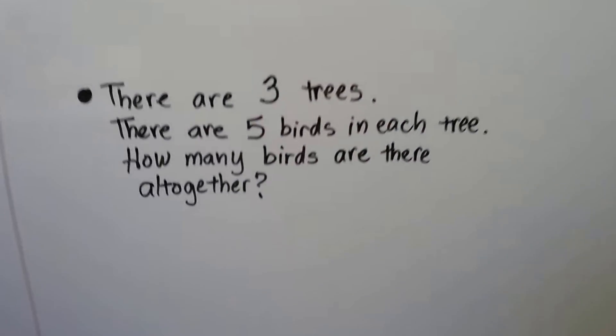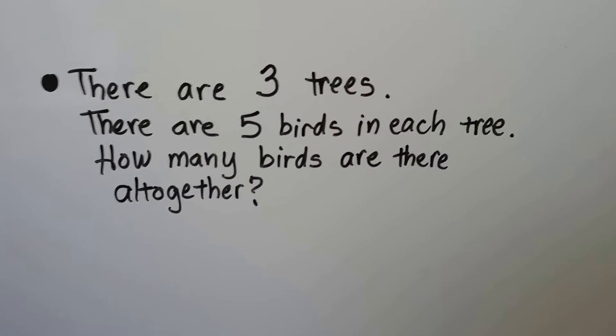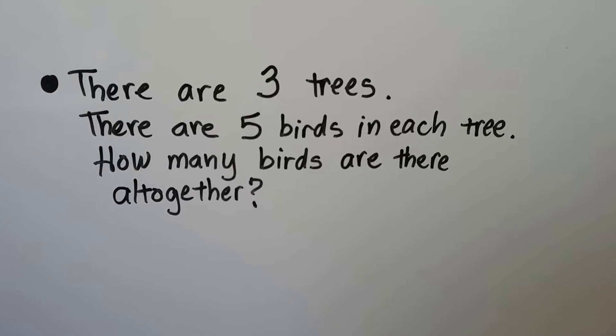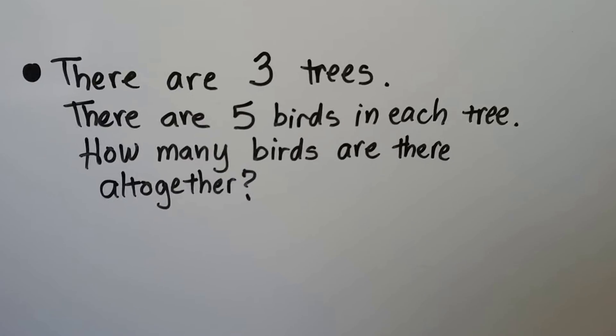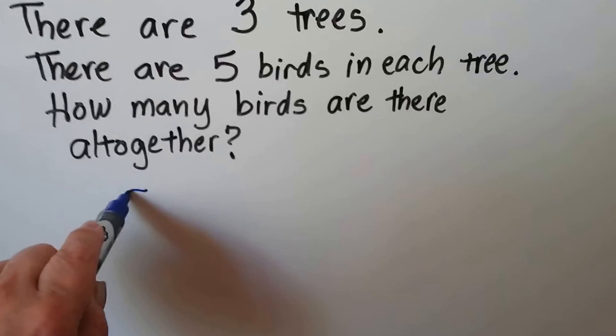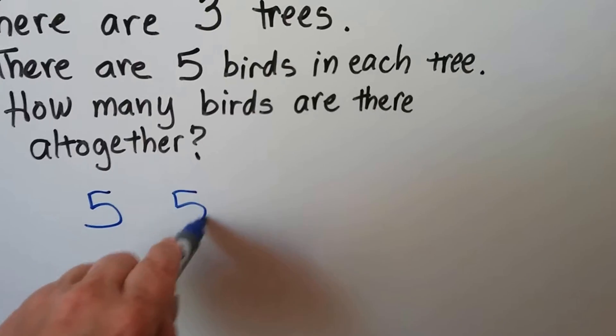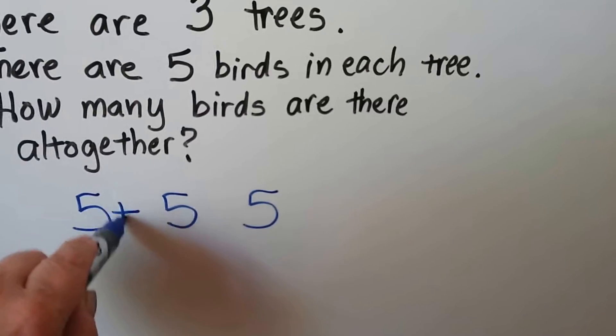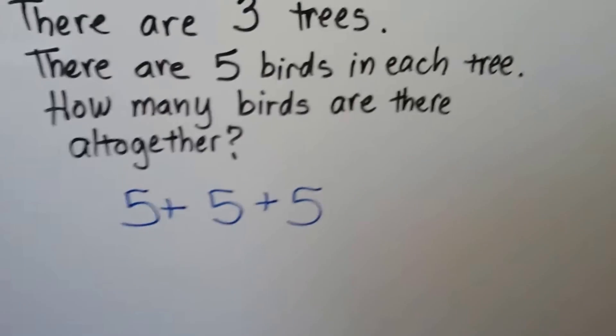How about this one? There are three trees. There are five birds in each tree. So how many birds are there all together? Well, there's five in one tree, there's five in another tree, and there's five in another tree, and we can add these up. This is repeated addition.